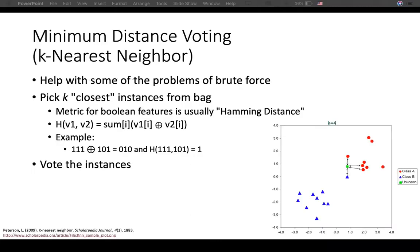There is an algorithm called minimum distance boarding, also known as KNN or K-Nearest Neighbors. KNN is a simple classification method in machine learning, commonly used when there is little to no information about the distribution of the data. Minimum distance boarding helps with some problems of brute force because we don't have to look at all the possibilities that exist in the bag.